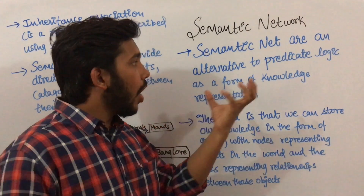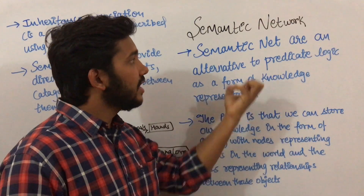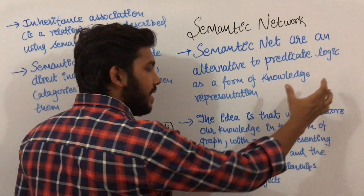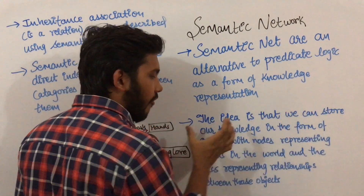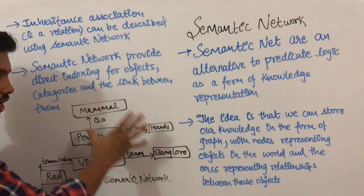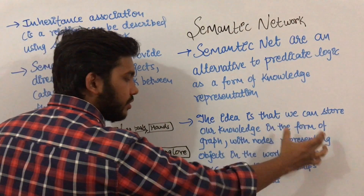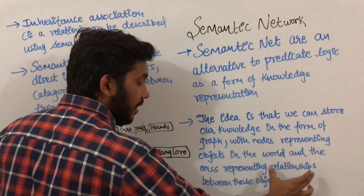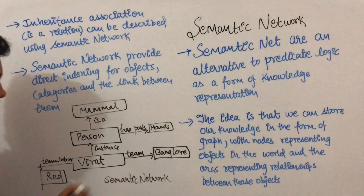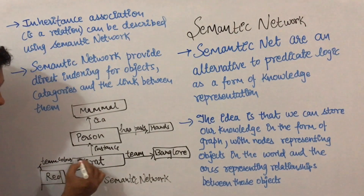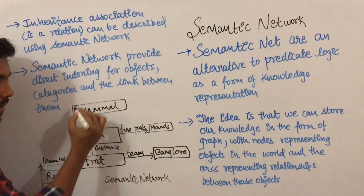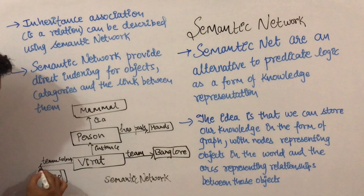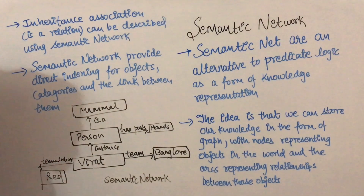The idea is that we can store our knowledge in the form of graphs — graphs with nodes representing objects in the world and arcs representing relationships between those objects. Here, Virat is an object, person is an object, mammal is an object, Bangalore is an object, hands is an object, and red is an object.